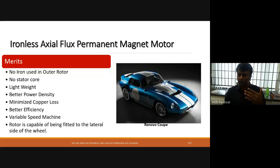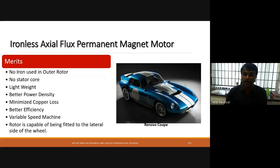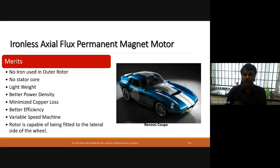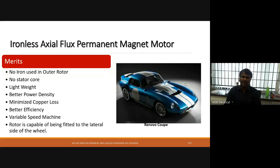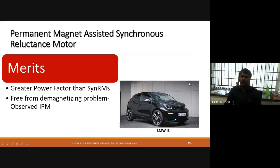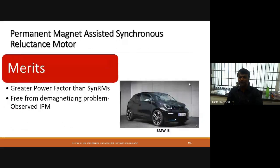The ironless axial flux permanent magnet motor has no iron in the outer rotor and no stator core, making it lightweight with better power density, minimized copper loss, and better efficiency. It is suitable for variable speed applications in electrical vehicles, and the rotor can also be fitted on the lateral side of the vehicle.